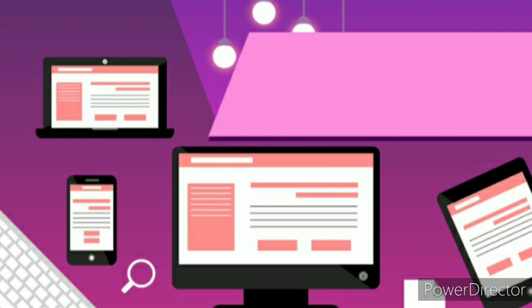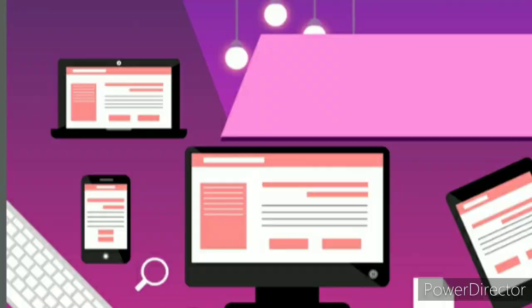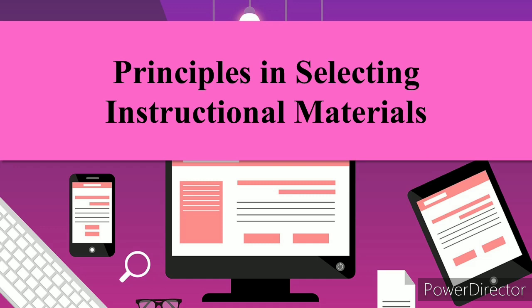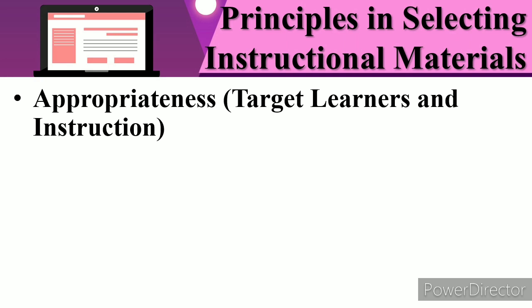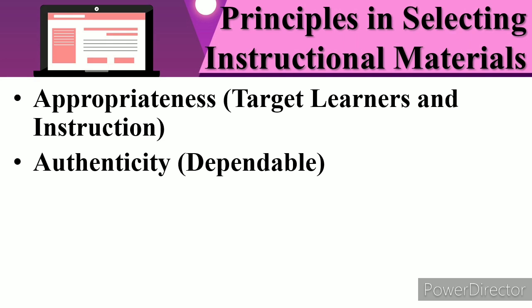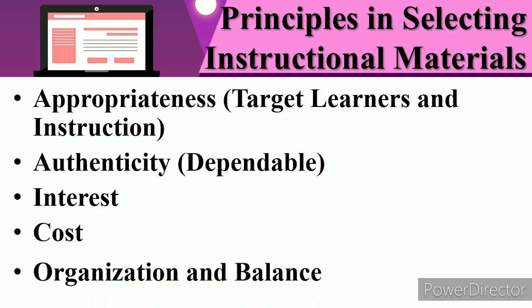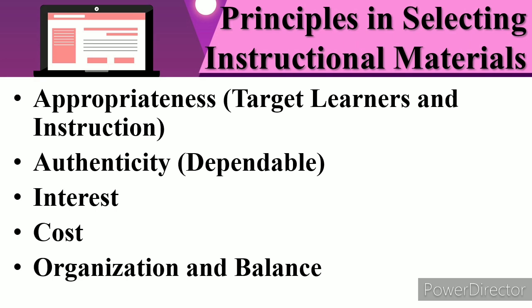My topic for this report is all about Principles in Selecting Instructional Materials. There are five principles. The first principle is the principle of appropriateness for target learners and instruction. The second is the principle of authenticity — dependable. The third is the principle of interest. The fourth is the principle of cost. The fifth and last is the principle of organization and balance. These five principles will help the future teacher to achieve their objectives in the class.